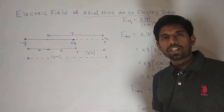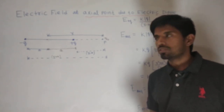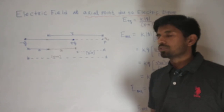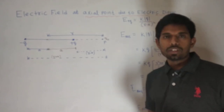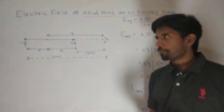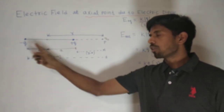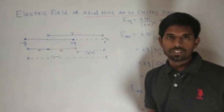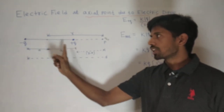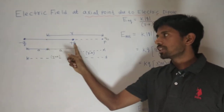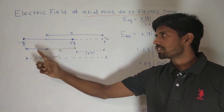Hello students. Today I am going to discuss about electric dipole. So what do you mean by electric dipole? Electric dipole is a set of two charges separated by a small distance whose magnitudes are always equal and opposite. Here you can see there are two charges: minus Q charge and plus Q charge, separated by a small distance.